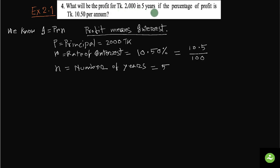What will be the profit for Taka 2000 in 5 years if the percentage of profit is Taka 10.50 per annum?